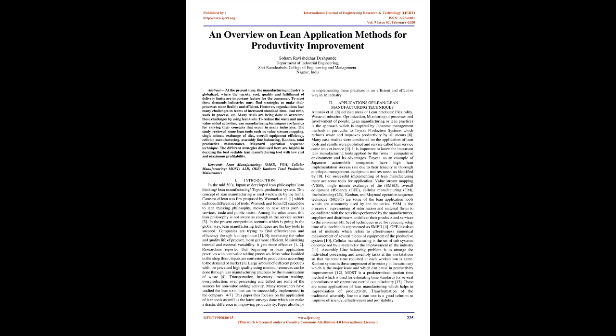Two: Applications of lean. Antonio et al. defined areas of lean practices as flexibility, waste elimination, optimization, monitoring of processes, and involvement of people. Lean manufacturing or lean practices is the approach inspired by Japanese management methods, in particular the Toyota Production System, which reduces waste and improves productivity. Many case studies were conducted on the application of lean tools and results were published, and a service called lean service came into existence.